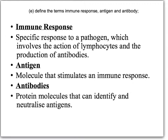The first slide requires you to be able to define the following things: the immune response, antigen, and antibody. Dealing with those in turn — the immune response is a specific response to a pathogen which involves the activation of lymphocytes and the production of antibodies. If a response involves production of memory cells as lymphocytes and antibodies, it's what we call an immune response.